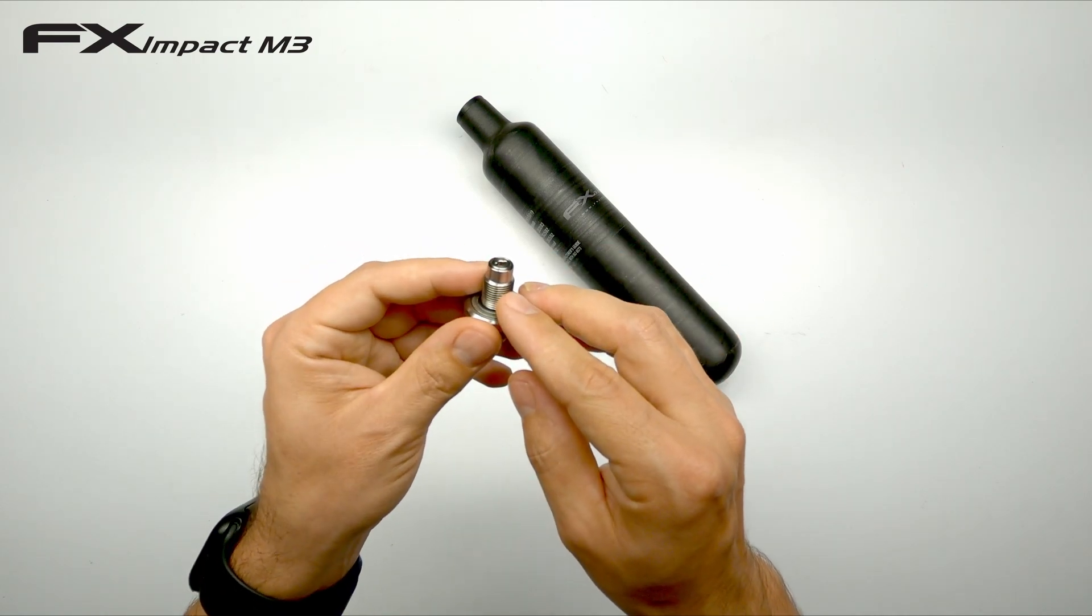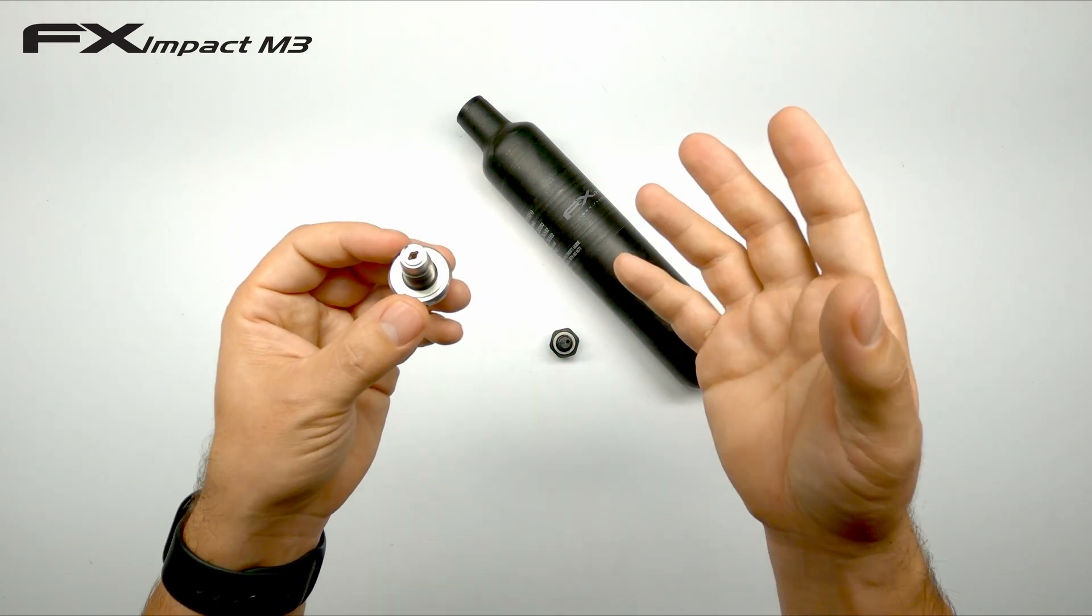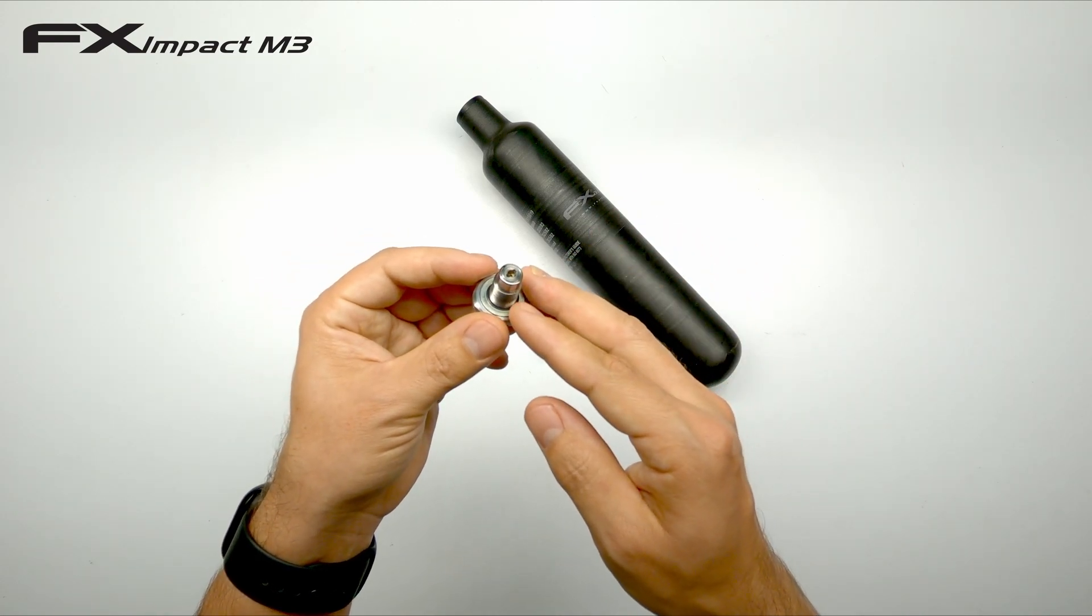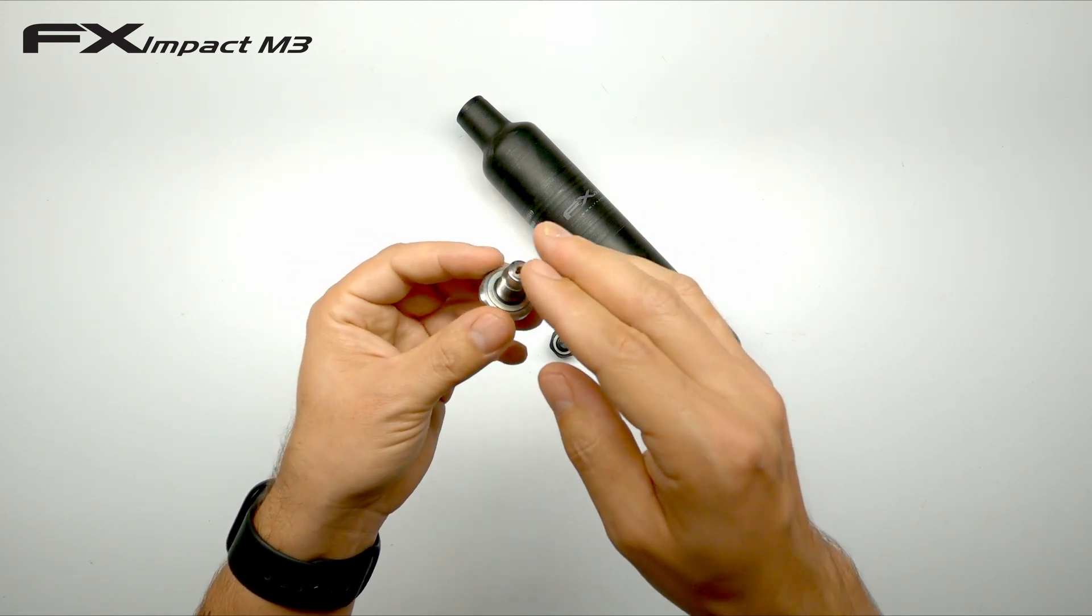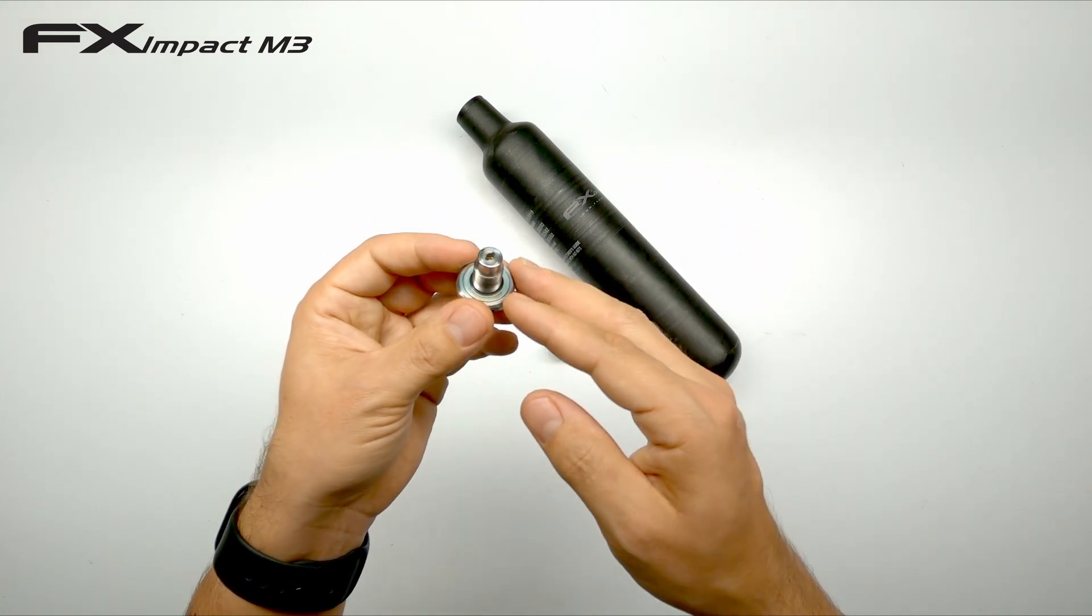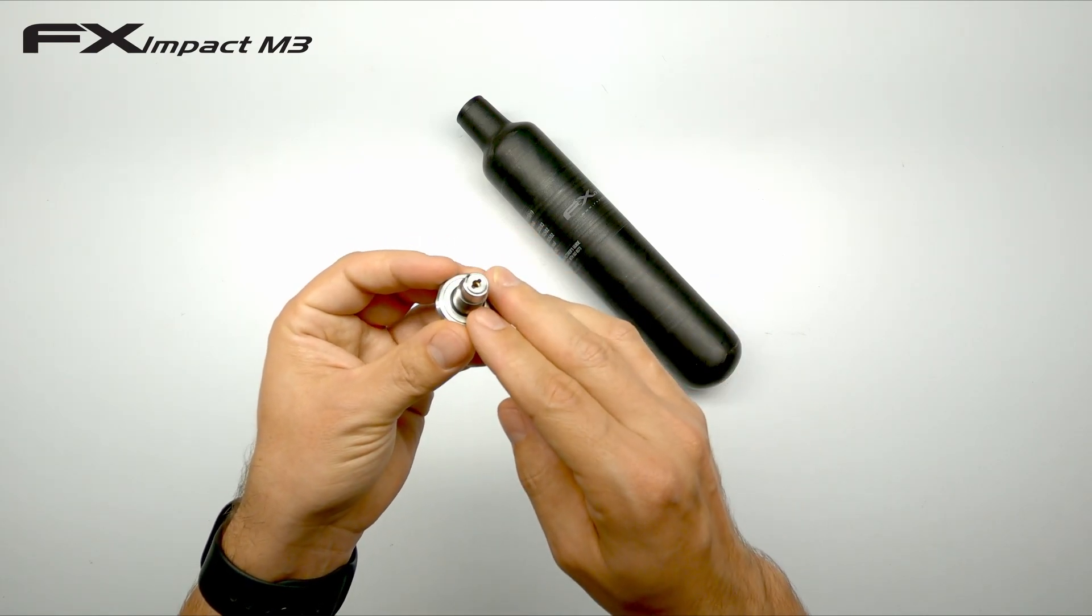This also explains the reason of the key shape faceplate you see here. They could have come up with a different design but that would make it very difficult to quickly adjust the regulator if you want. So you would have to remove the faceplate with a special tool in order to access the adjustment screw. That wouldn't be very handy so that's why they went with this design.